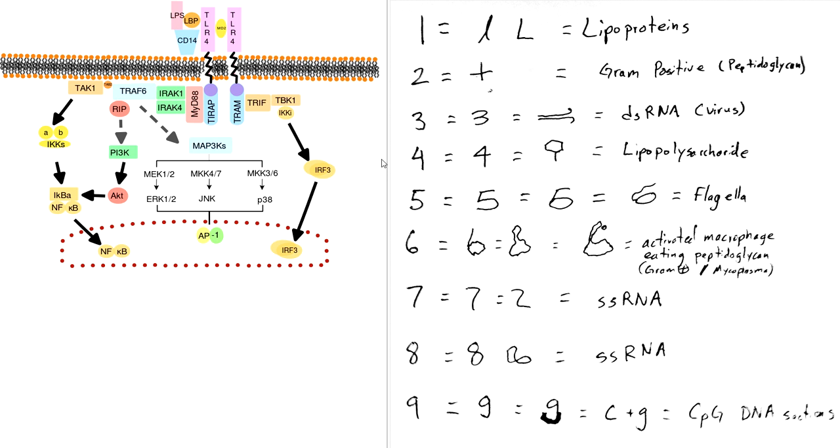So with this system you would write out one through nine, and then hopefully just by looking at the number itself you'll remember what it does. So if we start with number one, one looks like an L. There's a cursive lowercase and a capital L. L stands for lipoproteins. And you can also think about it as it's like a lipoprotein sticking out of the cell. I just think L is lipoprotein.